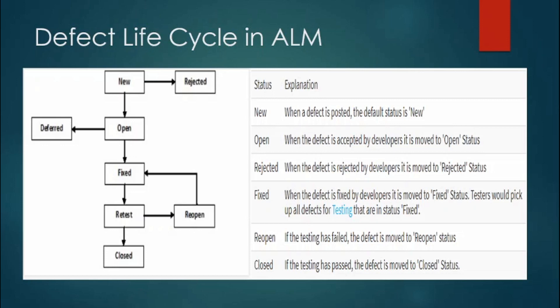When a defect is rejected by the developer, it is moved to 'Rejected' status. This may happen if the defect is a duplicate or not reproducible due to some data error. When the defect is fixed by the developer, it moves to 'Fixed' status, and the tester picks up all defects in fixed status for testing. If testing fails, the defect is moved to 'Reopen' status.